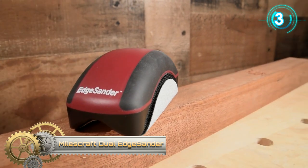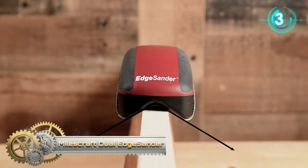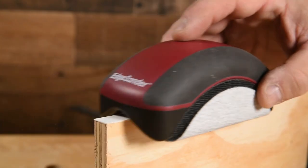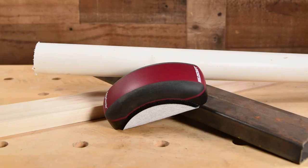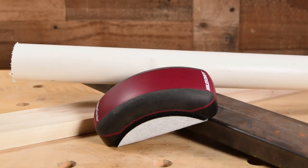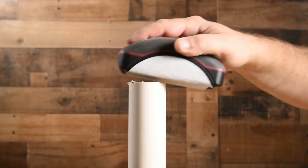Milescraft Dual Edge Sander. Milescraft Dual Edge Sander is designed to sand two rough edges at once. Why make two passes when you can make one? This product is ideal for quickly finishing veneer or laminate projects, but is versatile enough for any edge sanding project.